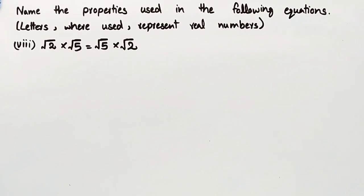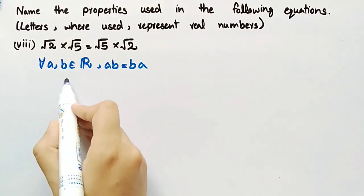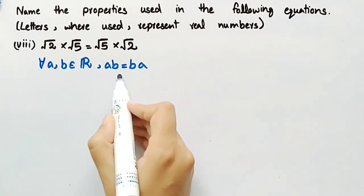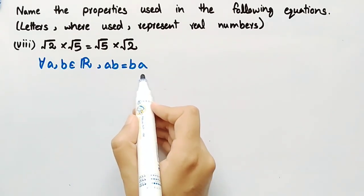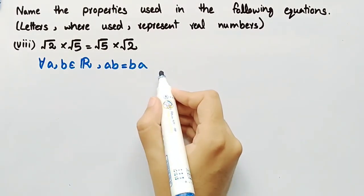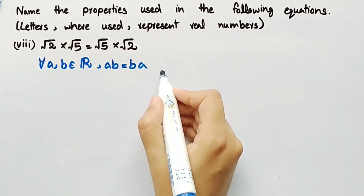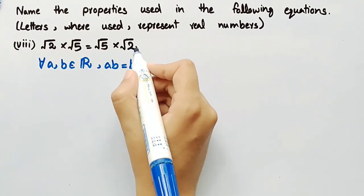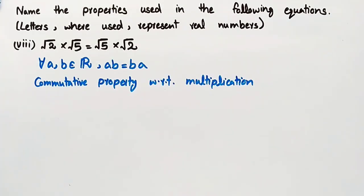Equation number 8 is √2 multiplied by √5 is equal to √5 multiplied by √2. By the commutative law of multiplication, for all A, B belonging to the set of real numbers, AB is equal to BA. The property used in this equation is the commutative property with respect to multiplication.